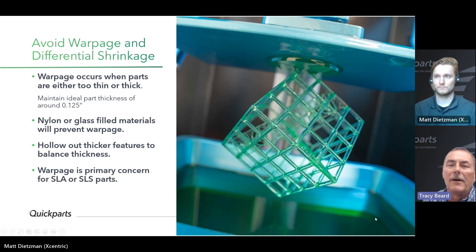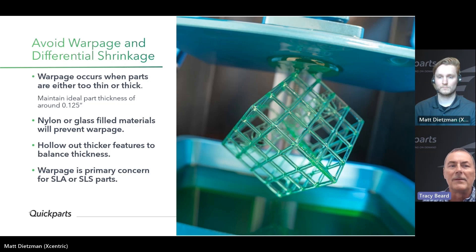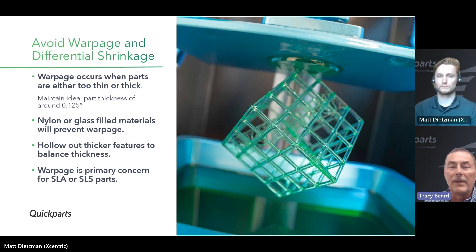Another common issue is warpage and differential shrink. This occurs when parts are either too thick or too thin. Different 3D printing processes and material combinations react differently to warpage and differential shrinkage. A good rule of thumb is to design parts with as close to uniform wall thickness as possible — ideally about an eighth of an inch, or 125 thousandths. When your design allows, hollow out or shell thick features to create more uniform wall thickness.